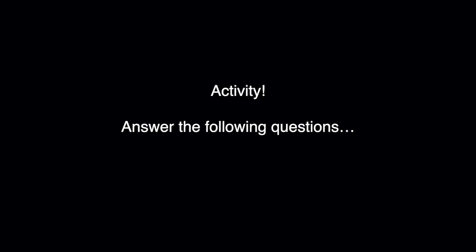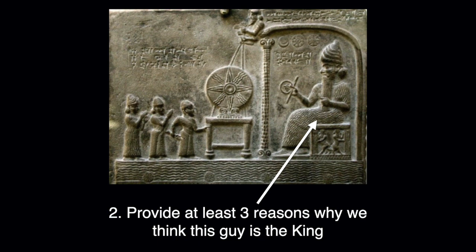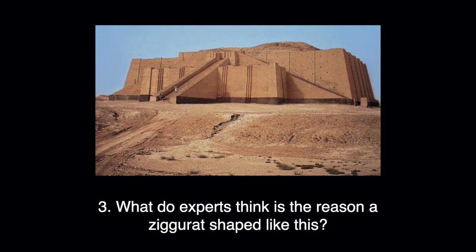So that concludes the lecture. For the canvas quiz, I'll show you a number of slides with questions. What is this figure doing and why? What tells us that the figure the arrow points to is the king — give three reasons. Can you remember why experts think that the ziggurats are shaped in this form? And we have a lot of information about Gudea — how come?